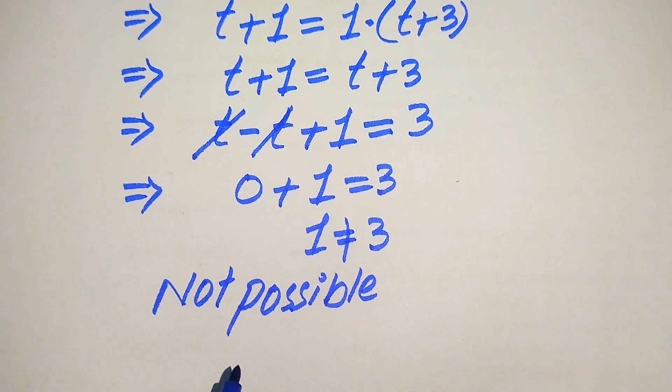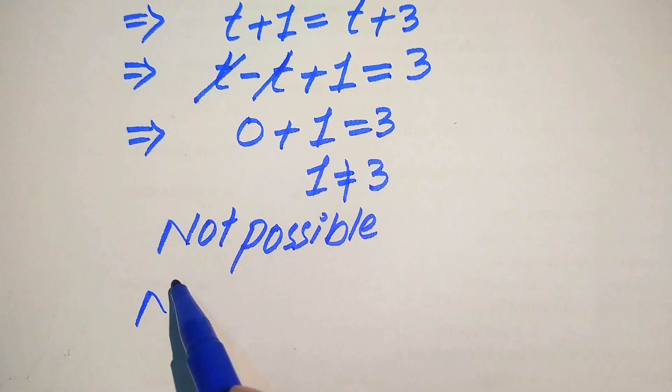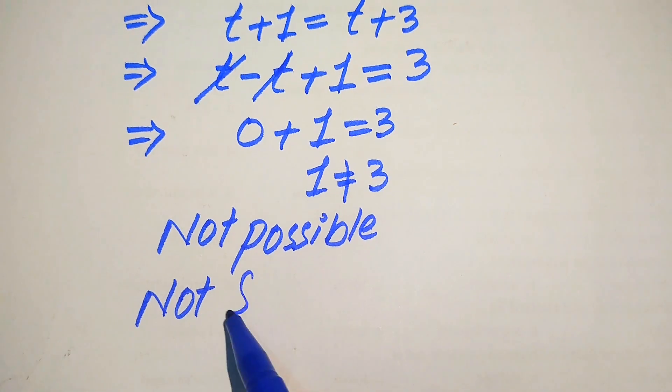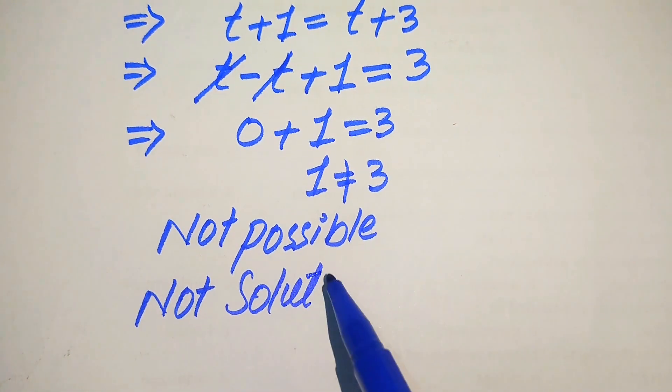So if it is not possible, this means that we cannot find any value of t from here. So if we do not find any root of t, we finally conclude that this equation has no solution that exists.